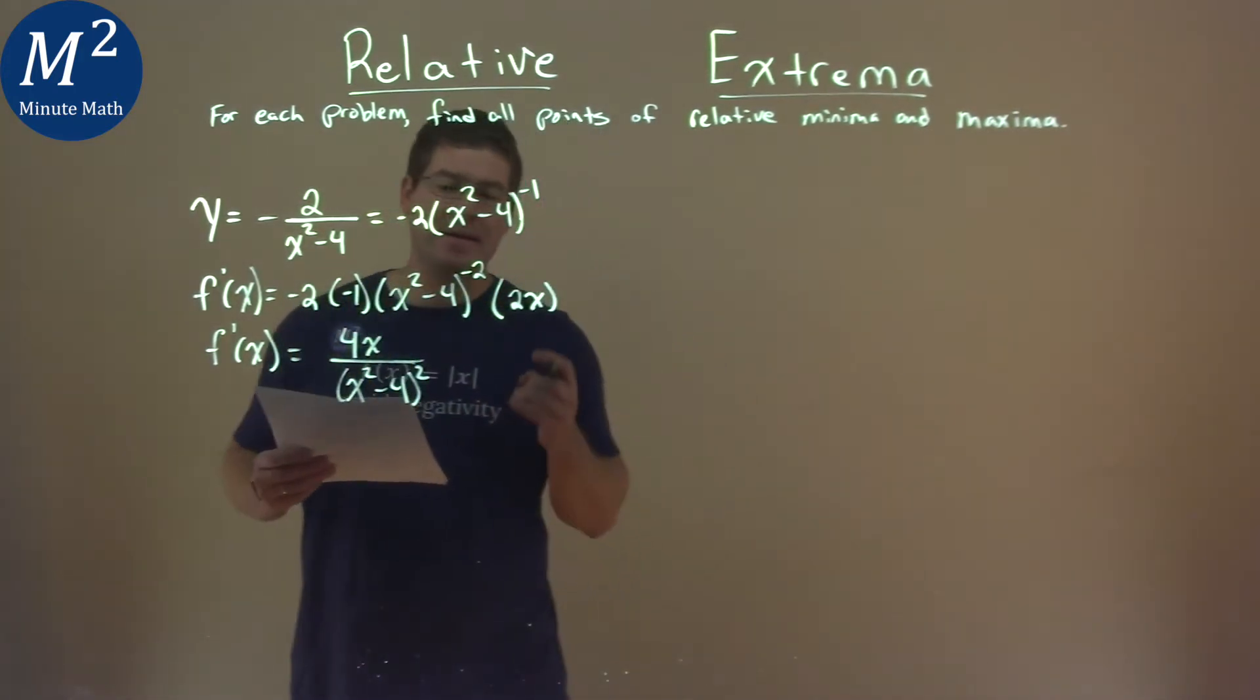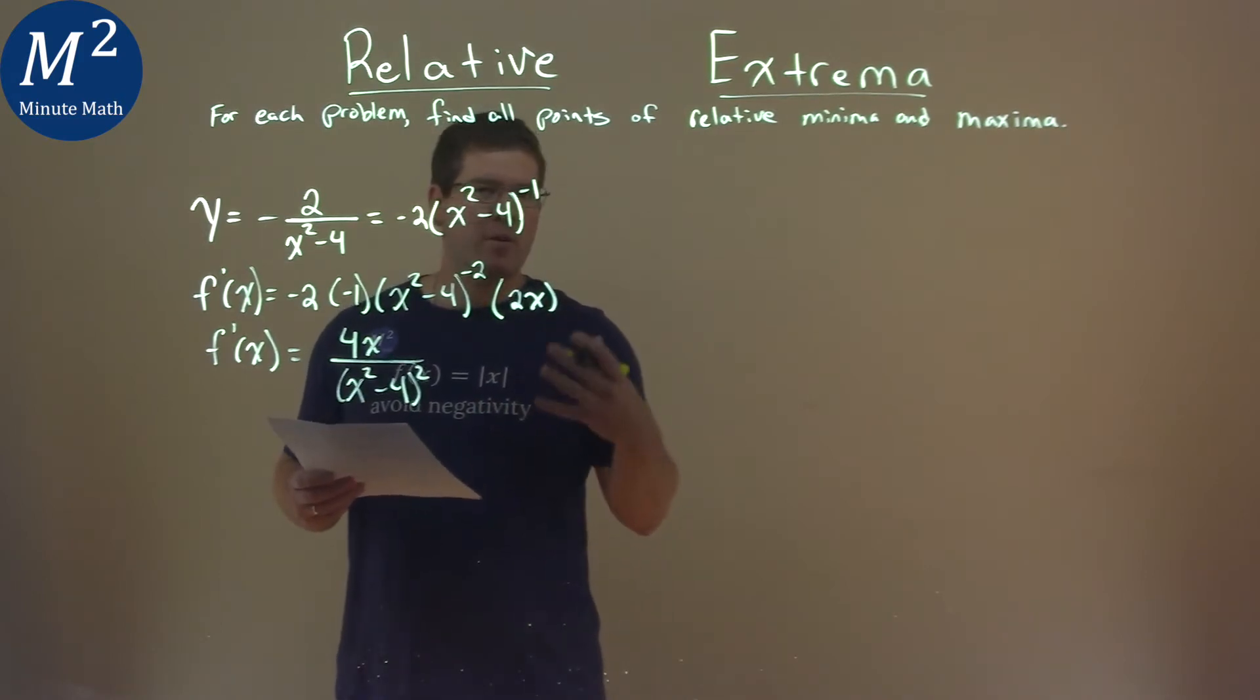Okay, so what I'm going to do now is set my numerator and denominator to equal 0 here, and we're going to find those critical points.